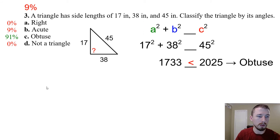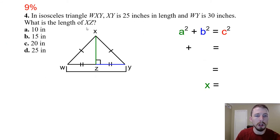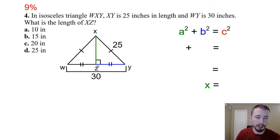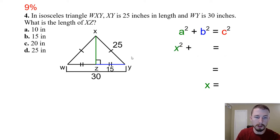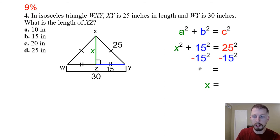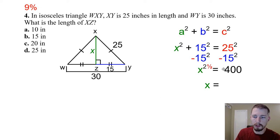Number four — for isosceles triangle WXY, XY = 25 inches and the base WY = 30 inches. We want the length of XZ. Since the triangle is isosceles, the altitude bisects the base, so Z is the midpoint and WZ = 15. Now we have legs 15 and x and hypotenuse 25: x² + 15² = 25². Subtract 15² from both sides: x² = 625 − 225 = 400. Take the square root: x = √400 = 20. Answer: C.